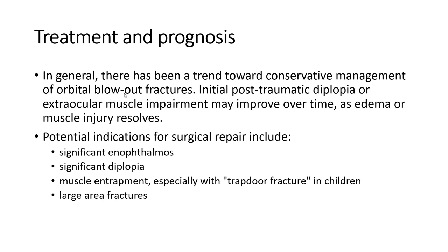So what is the treatment of this fracture? In general, there has been a trend toward conservative management of orbital blowout fractures. Initial post-traumatic diplopia or extraocular muscle impairment may improve over time as edema or muscle injury resolves. Potential indications for surgery include significant enophthalmos, significant diplopia, muscle impairment especially with trapdoor fracture in children, and large area fractures.